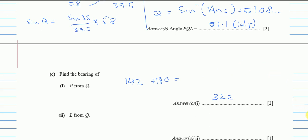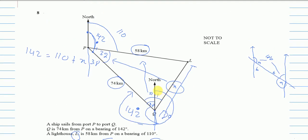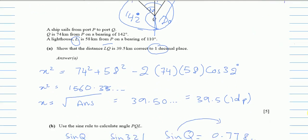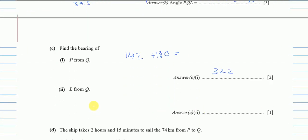Now find the bearing of L from Q. Starting from Q's north going to L: the full angle PQL is 51.1° and the left portion (38°, found from the alternate angle) must be subtracted to leave just the right portion. So the bearing of L from Q is 51.1° − 38° = 13.1°.